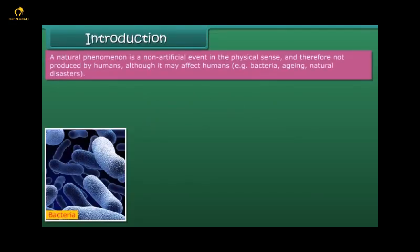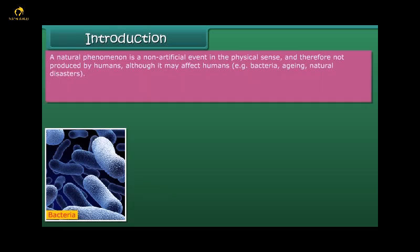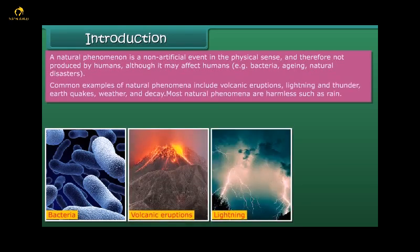A natural phenomenon is a non-artificial event in the physical sense and therefore not produced by humans, although it may affect humans. Examples include bacteria, aging, natural disasters, volcanic eruptions, lightning and thunder, earthquakes, weather, and decay.